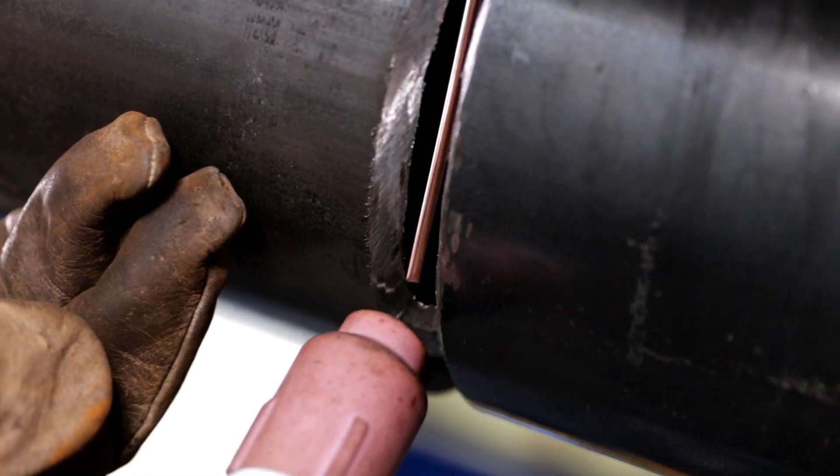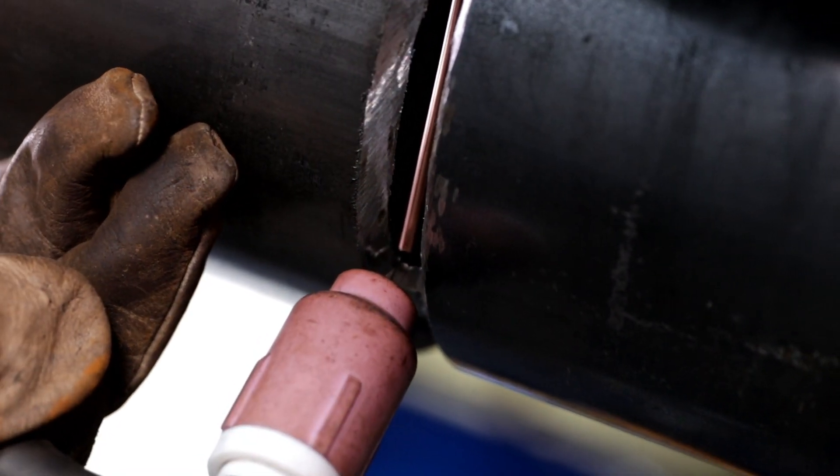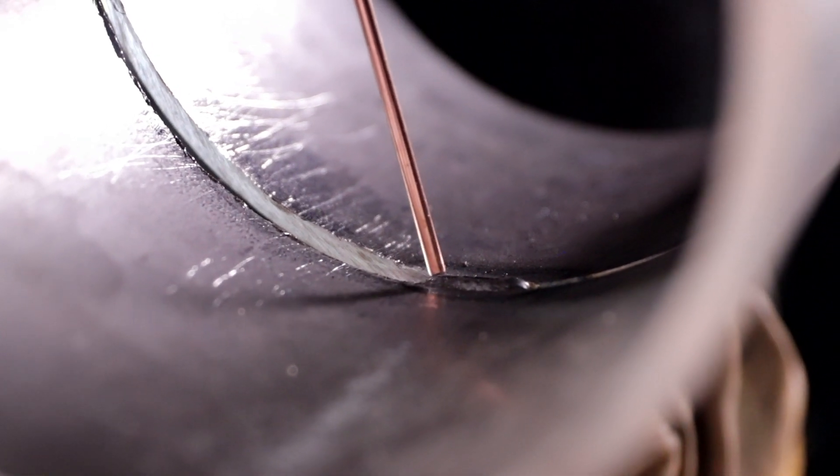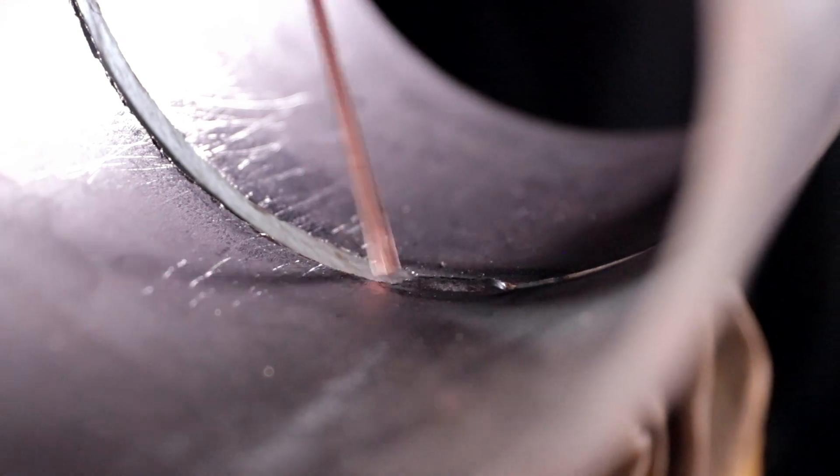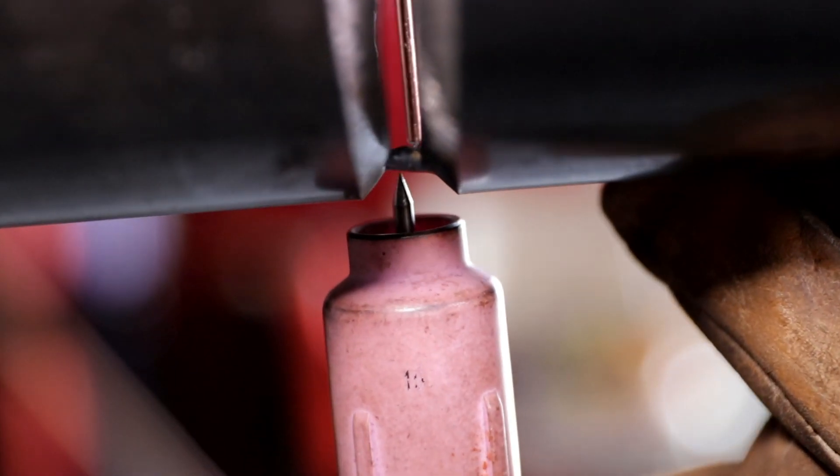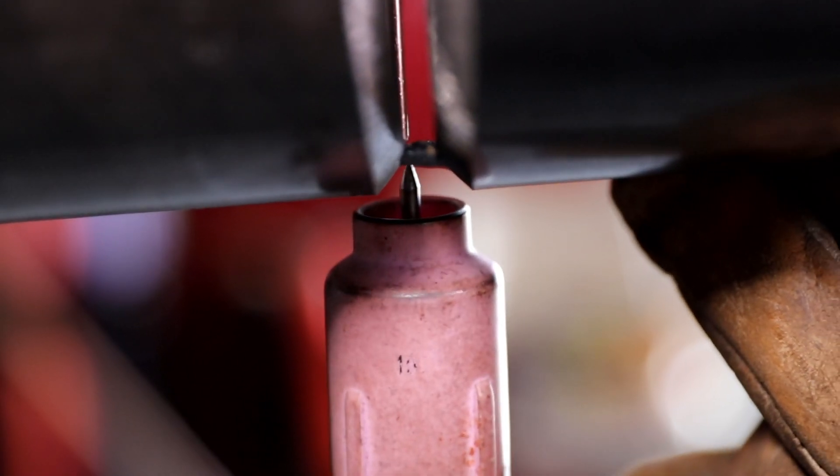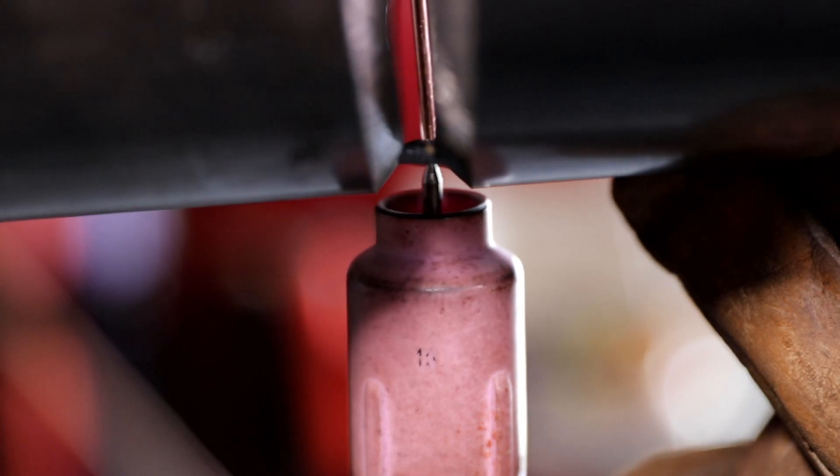And you want to move your rod according to your tungsten. So your tungsten moves to the left, to the left over here, your rod moves over there too. Your tungsten moves to the right, your rod moves over there too. And you just keep following it like that.